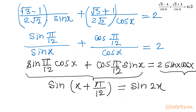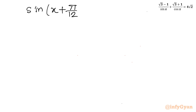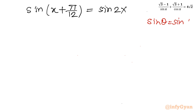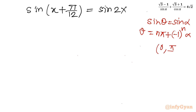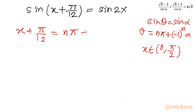Now let us find the general solution. We have sin(x + π/12) = sin(2x). Using the general formula: if sin θ = sin α, then θ = nπ + (−1)^n · α. Applying here: x + π/12 = nπ + (−1)^n · 2x. We will check solutions lying in the interval (0, π/2), i.e., in the first quadrant.